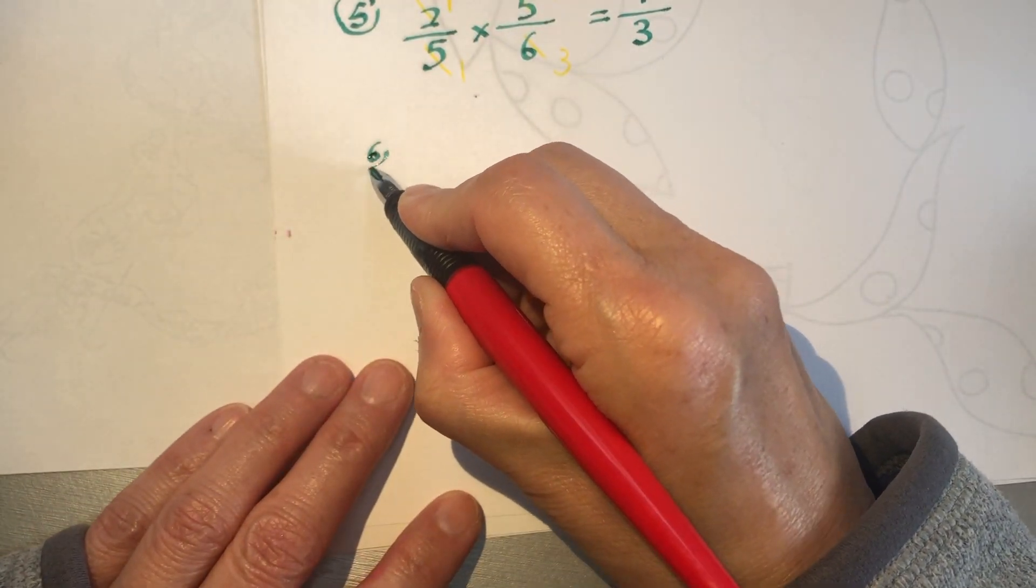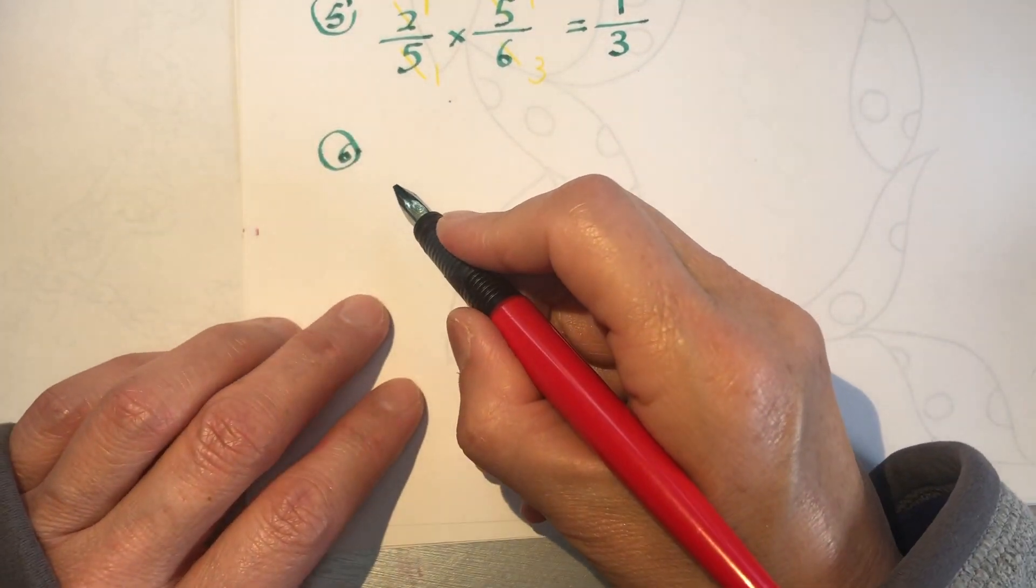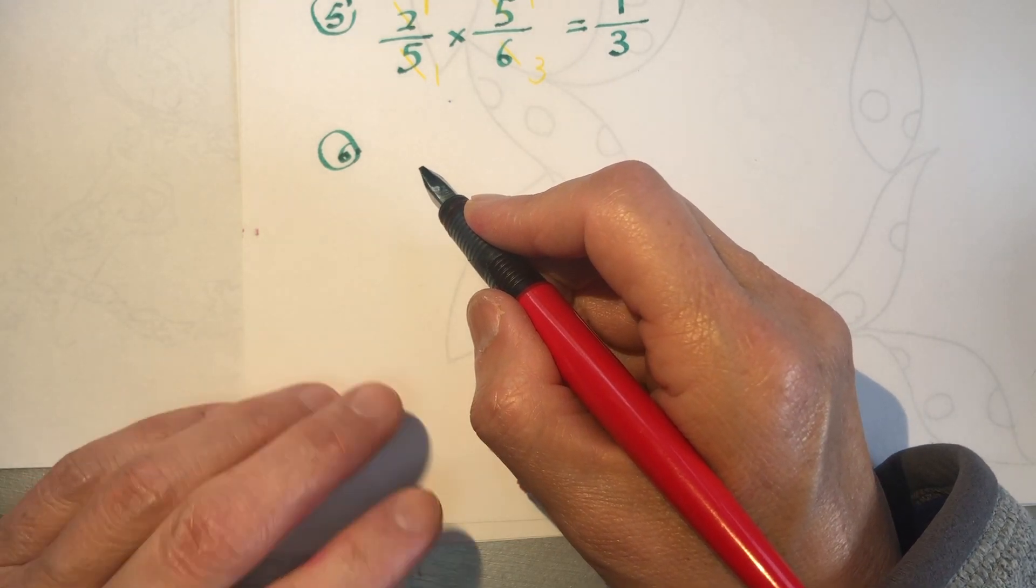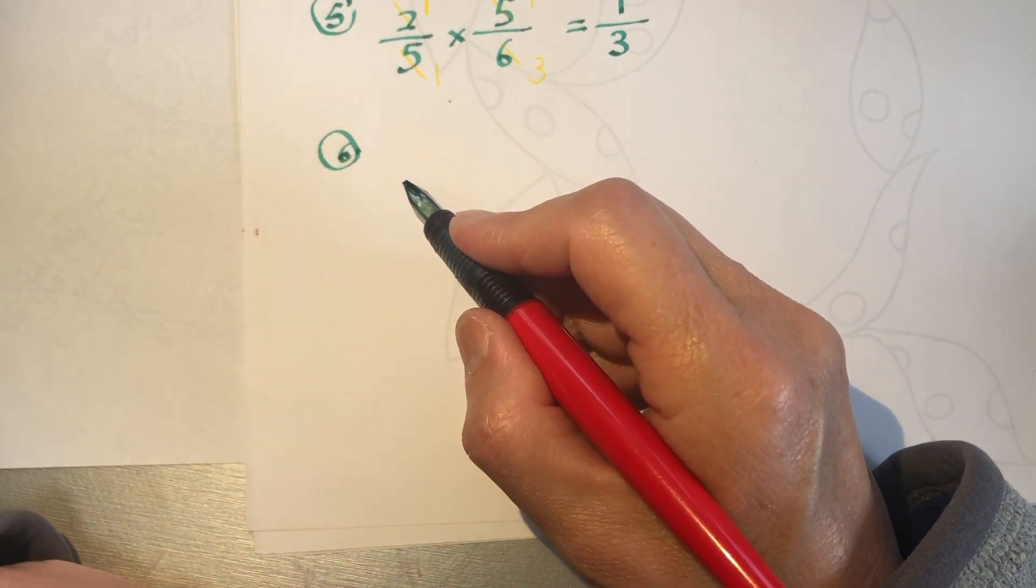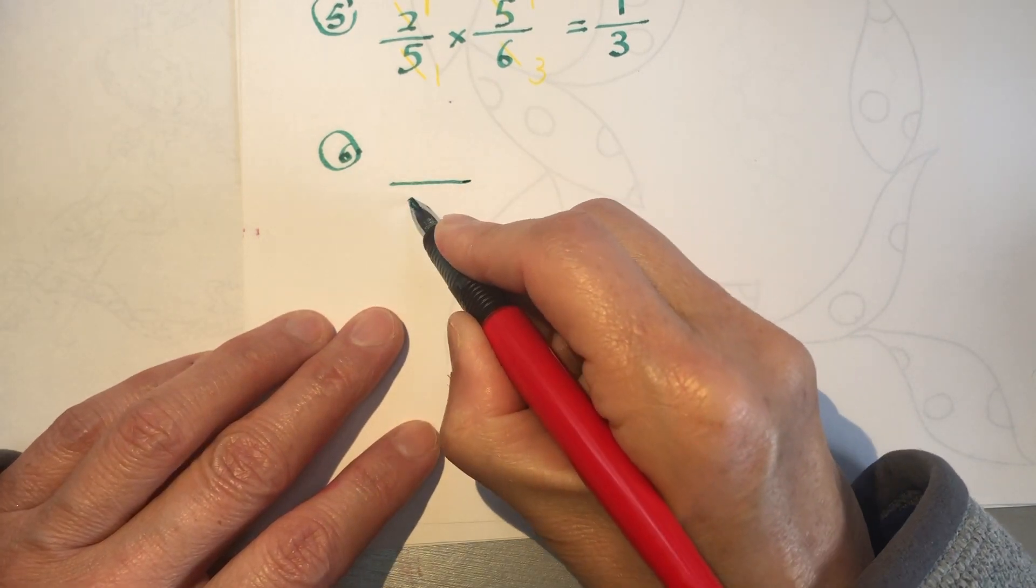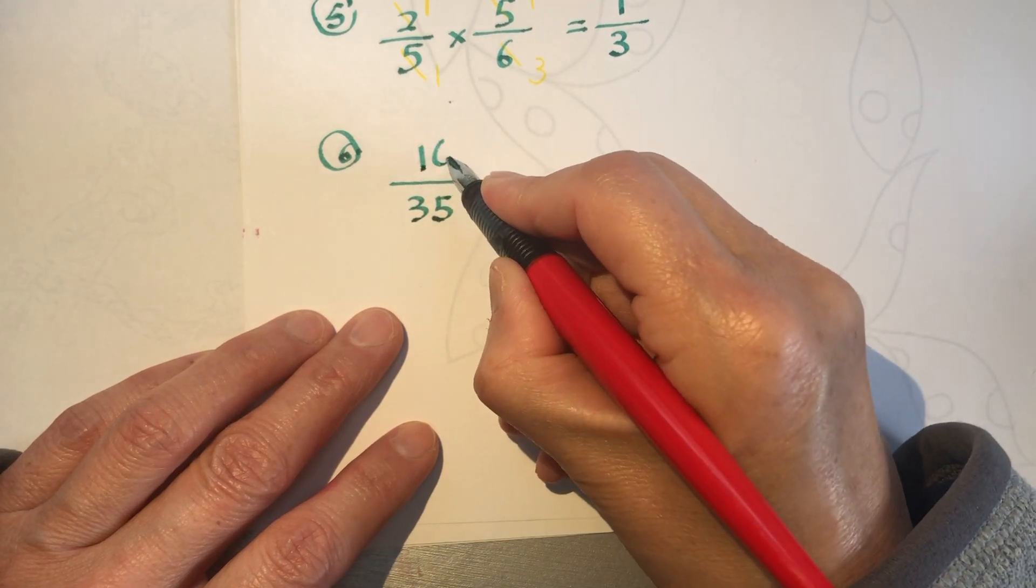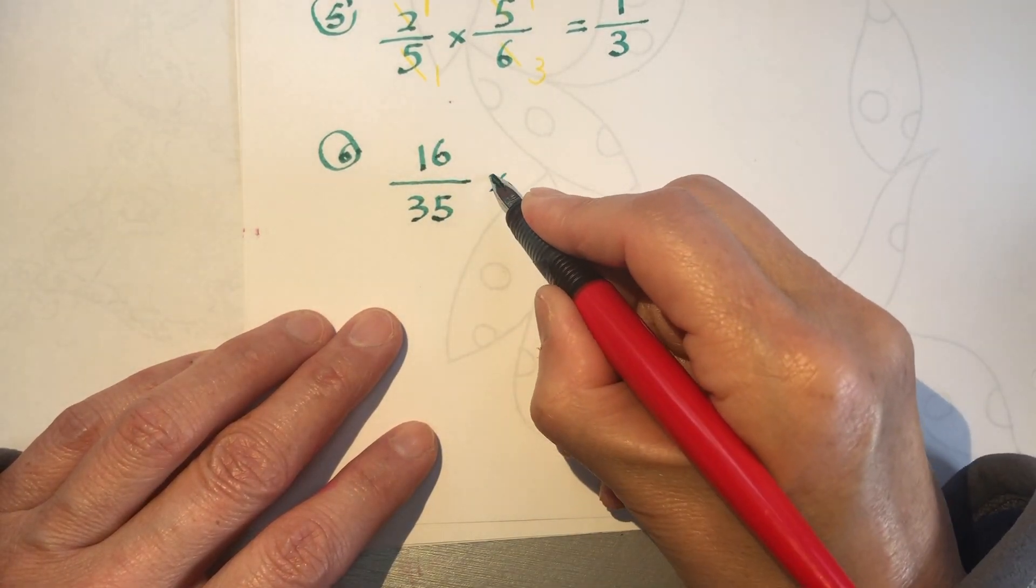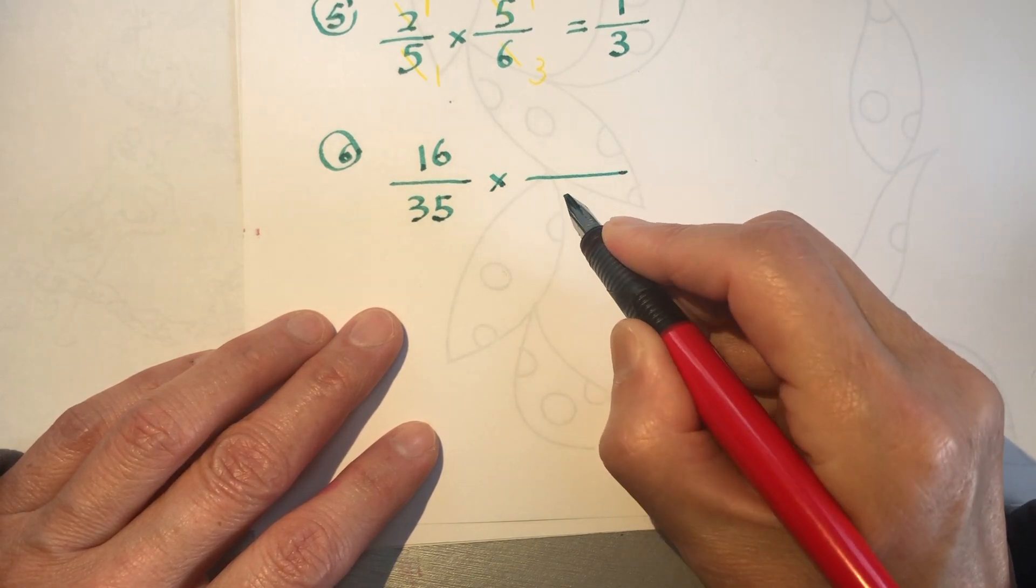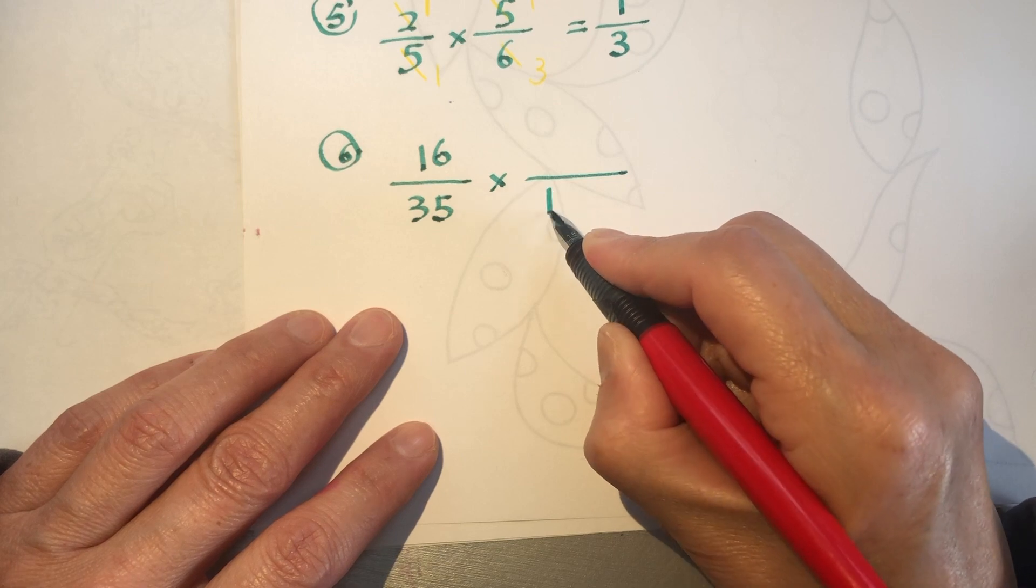Okay, question number 6. We will just go ahead with that method, with our simplified, first simplified method. Because when number becomes big, you have to... 16 over 35 times 49 over 160.